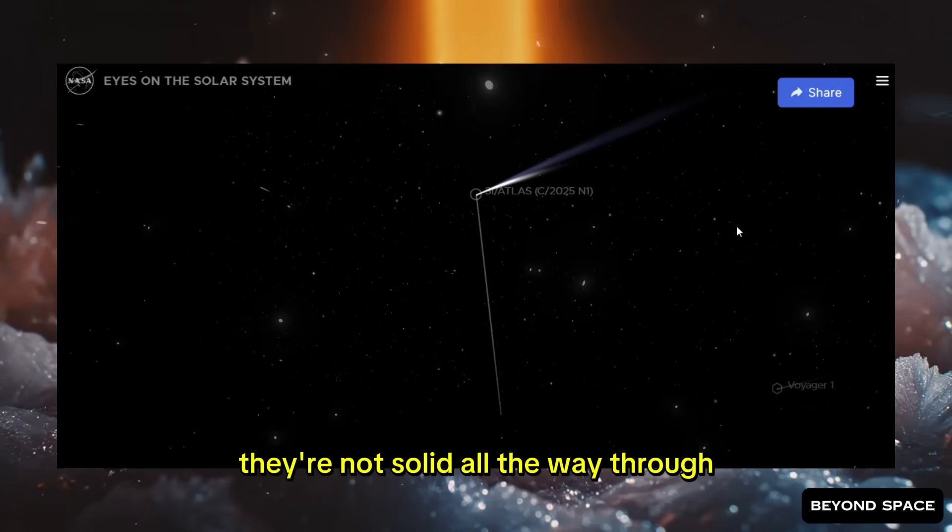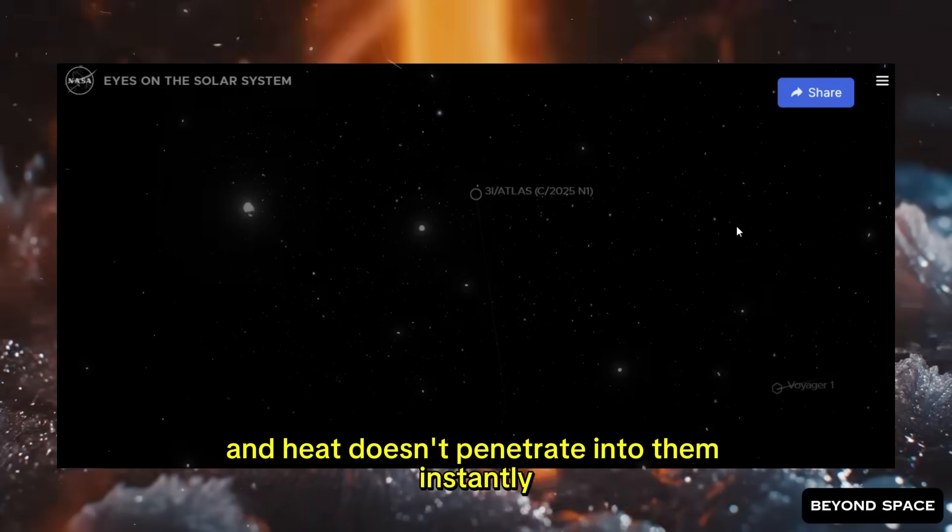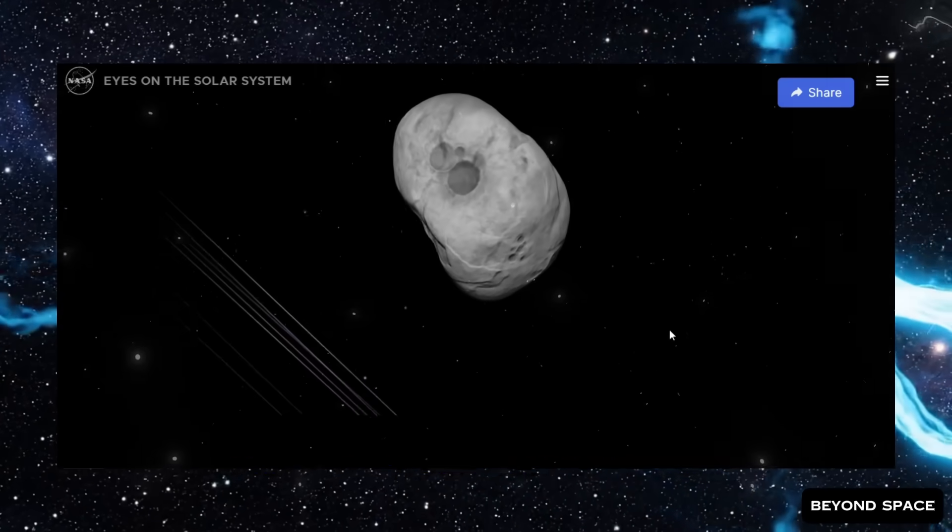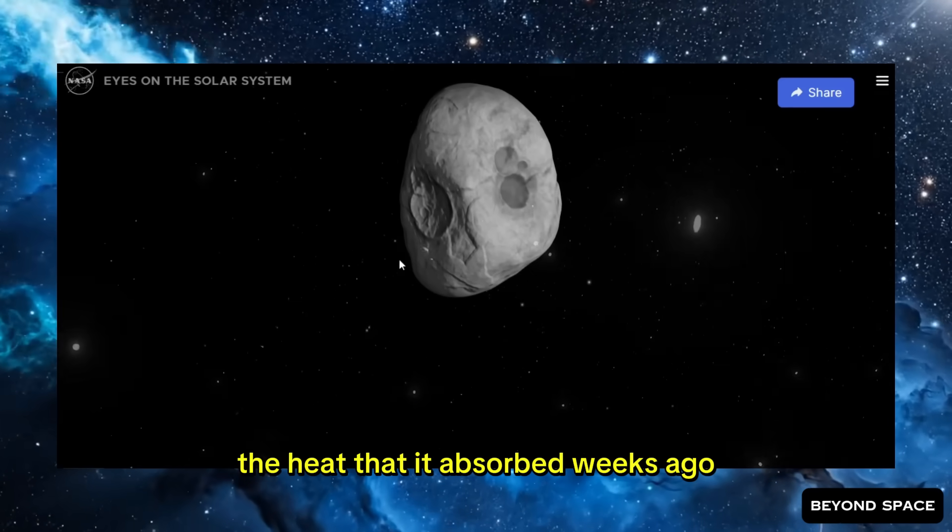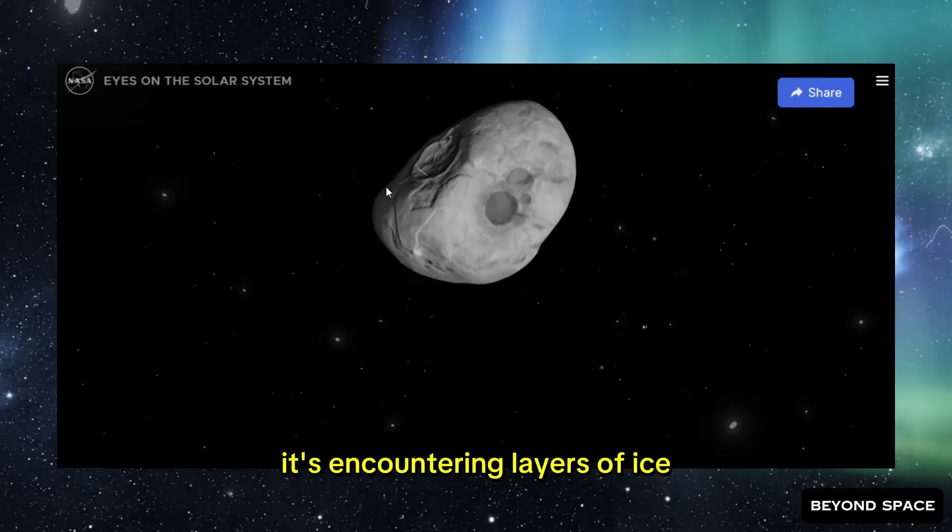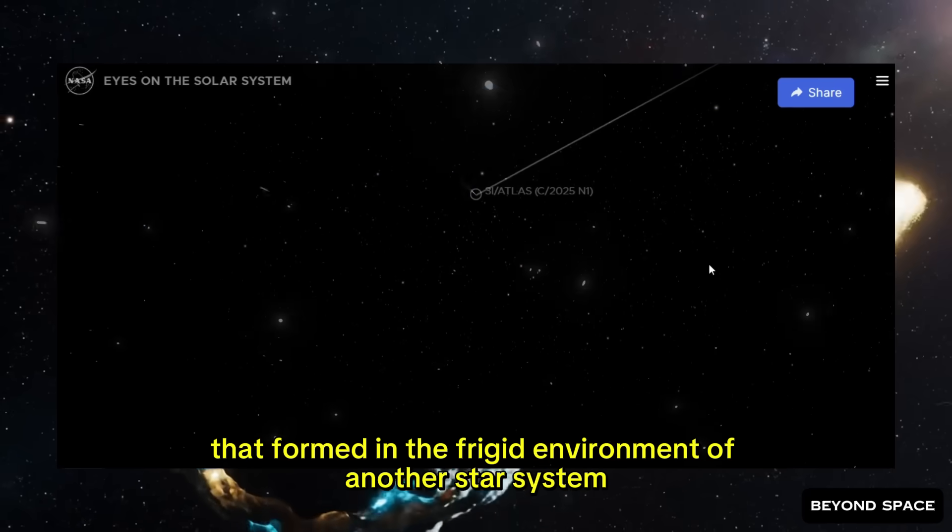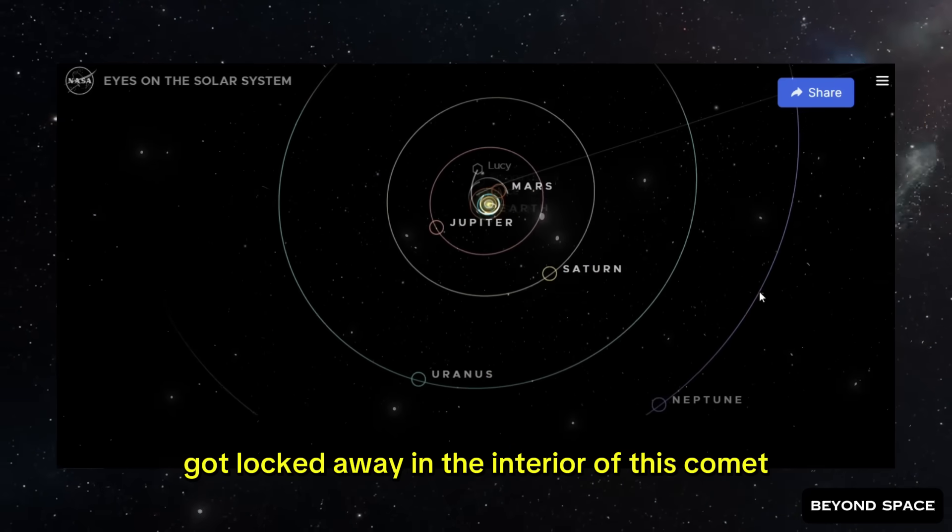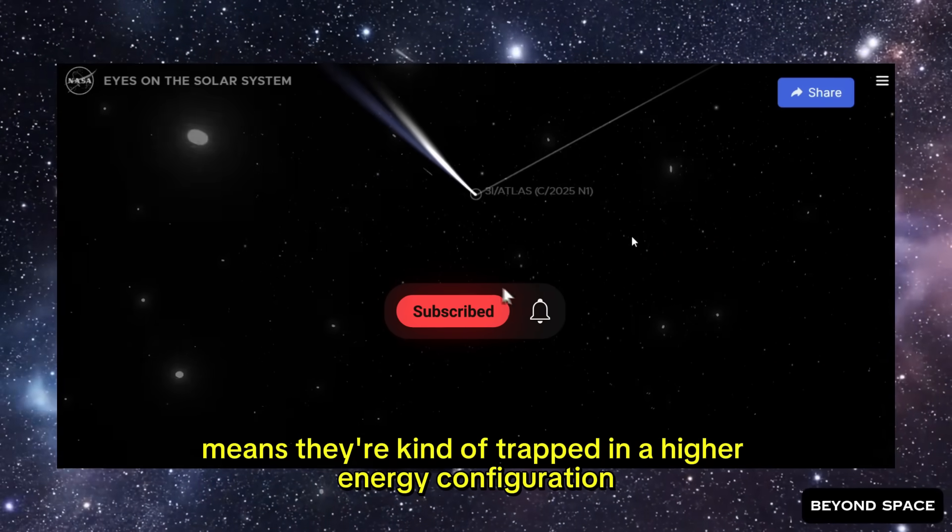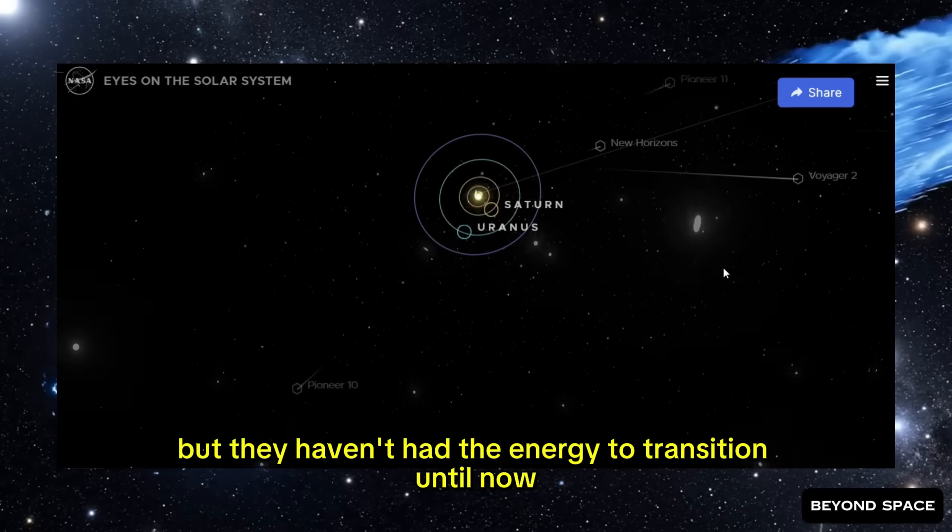But here's the thing about comets. They're not solid all the way through. They're these loosely bound collections of ice, rock, and organic material, and heat doesn't penetrate into them instantly. It takes time. So even though 3i Atlas is now getting farther from the sun, and receiving less direct solar heating, the heat that it absorbed weeks ago is still working its way deeper into the nucleus. And as that thermal wave propagates inward, it's encountering layers of ice that haven't been exposed to warmth in billions of years. These are ices that formed in the frigid environment of another star system, got locked away in the interior of this comet, and have been frozen in these metastable states ever since. Metastable means they're kind of trapped in a higher energy configuration. They're not in their lowest energy state, but they haven't had the energy to transition. Until now.